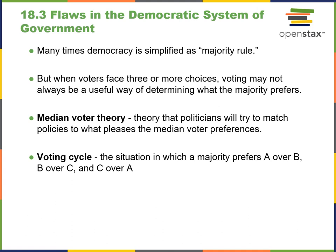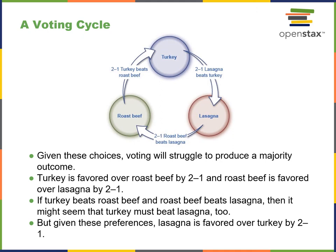Median voter theory holds that politicians try to match policies to what pleases the median voter. There's always a discussion about whether a party goes far right or left to build a fervent voter base, but there's also always a pull back toward the middle to capture a larger cross-section of the voting public. Voting cycles describe a situation where the majority prefers A over B, B over C, or C over A — this is more in line with what happens in primaries. Ultimately, the presidential election choice is binary after each party puts forward their candidate. Voting can struggle to produce a majority outcome, making the process quite circular.